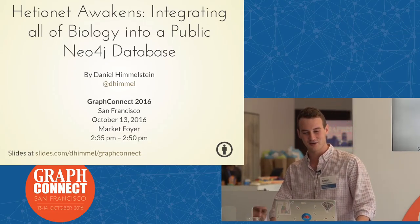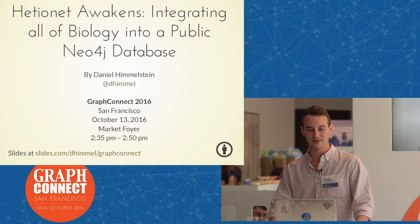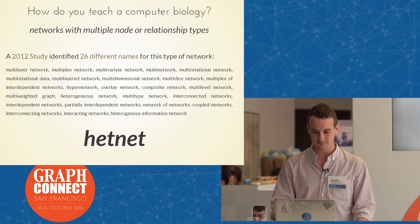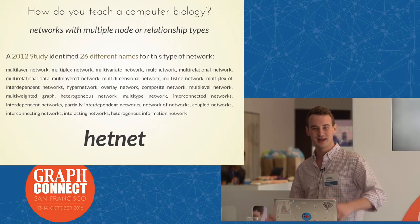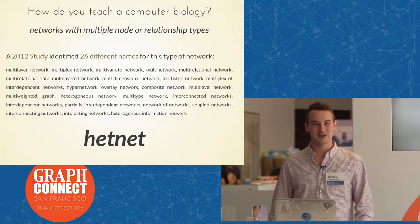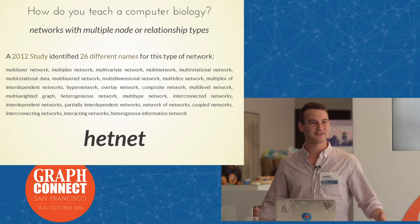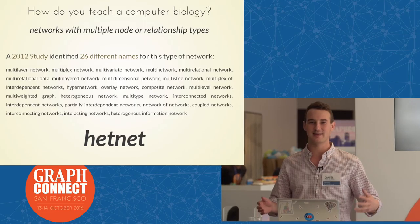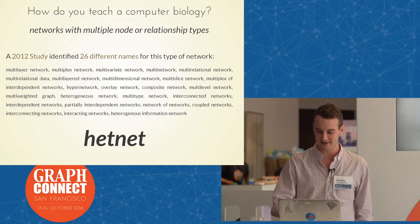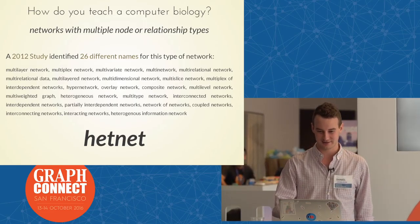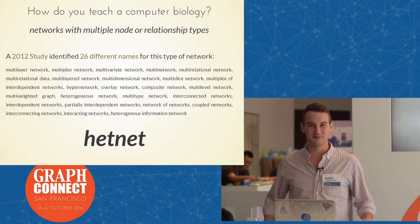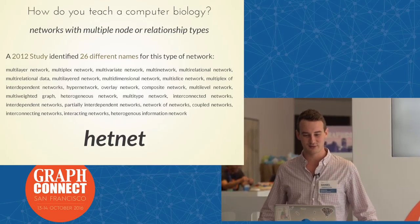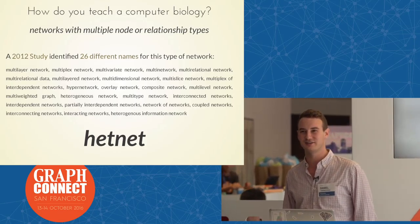The title is Hetionet Awakens: integrating all of biology into a public Neo4j database. I started my PhD with the question, how do you teach a computer biology? What's the best way to encode biological and medical knowledge into a computer so that the computer can operate and understand that information? I decided pretty quickly that the most intuitive way would be networks with multiple node or relationship types.